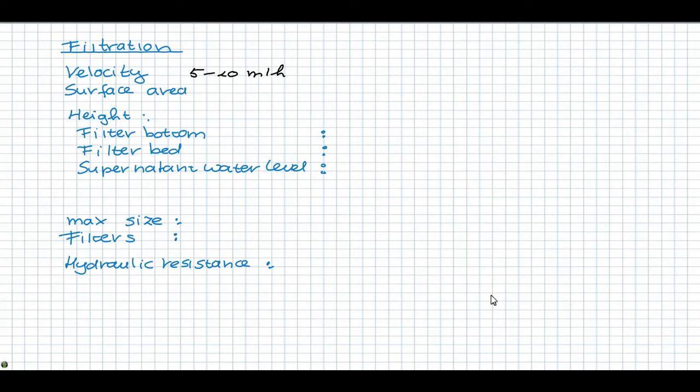Let's assume a velocity of 10 meter an hour. This results in a total area of the flow divided by the velocity, which is 1000 cubic meter an hour divided by 10 meter an hour, giving an area of 100 square meter.